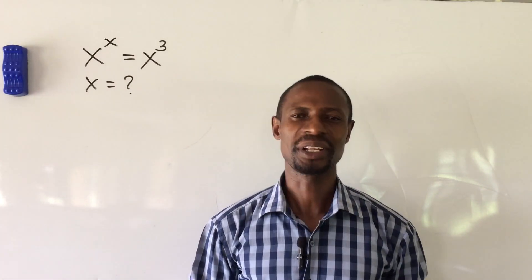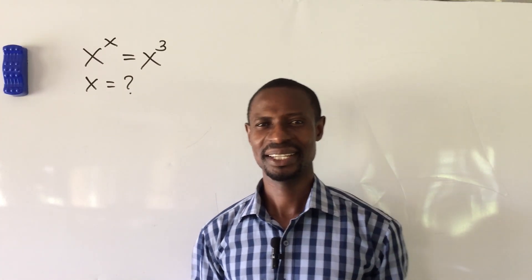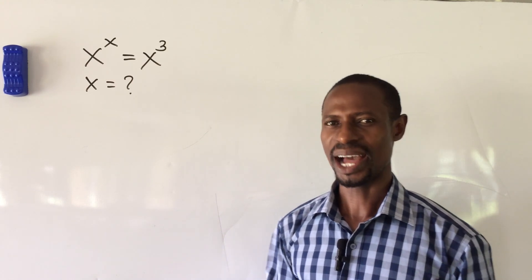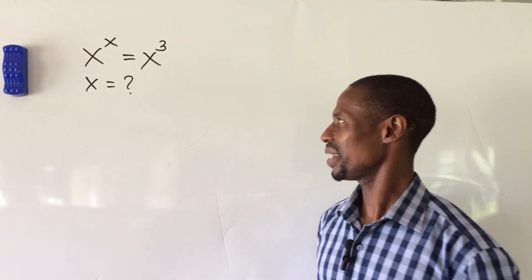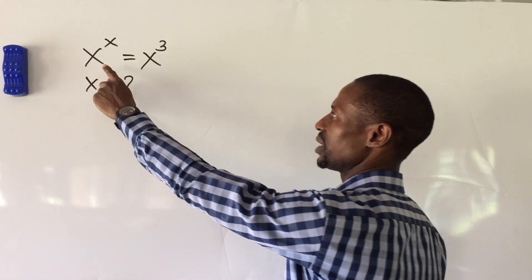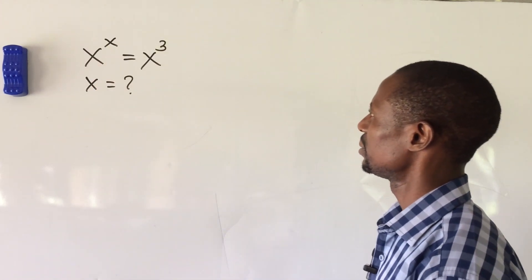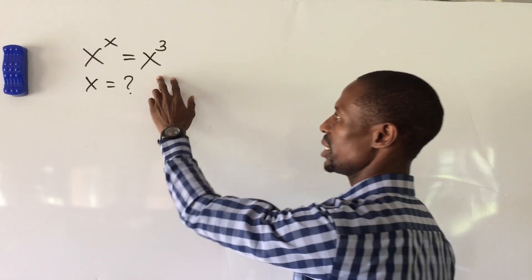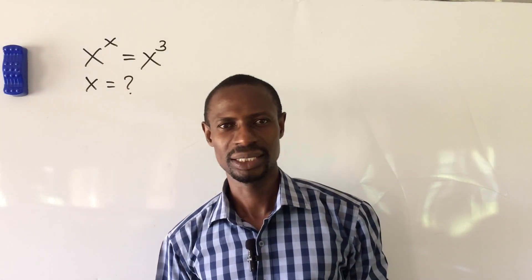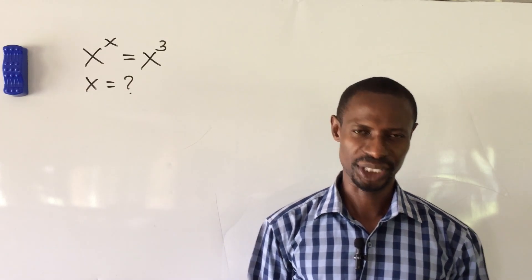Welcome everyone, this is Online Math TV where we learn mathematics every day. My name is Jake's Animal. Today we have an exponential challenge: x to the power of x equals x to the power of 3. What will be the three possible values of x?